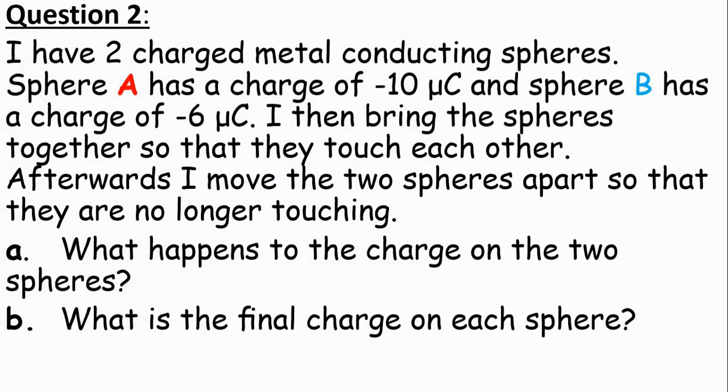Question 2. I have two charged metal conducting spheres. Sphere A has a charge of negative 10 microcoulombs and sphere B has a charge of negative 6 microcoulombs. I then bring the spheres together so that they touch each other. Afterwards I move the two spheres apart so that they are no longer touching. A. What happens to the charge on the two spheres? B. What is the final charge on each sphere?